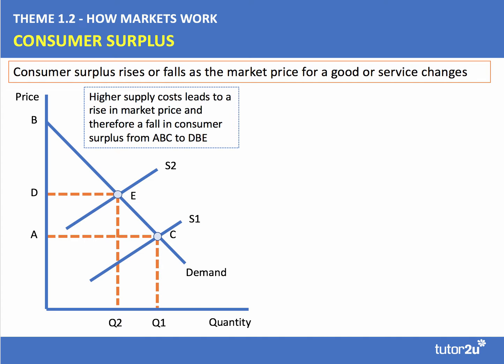In the first example on the left-hand side, we see an inward shift of supply caused by higher supply costs — perhaps an increase in the cost of raw materials or an increase in wages. The higher supply cost leads to an inward shift of supply from S1 to S2, which causes a rise in market price from A to D, and as a result the quantity in the market contracts from Q1 to Q2.